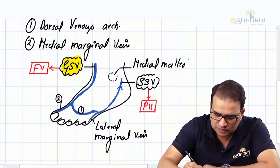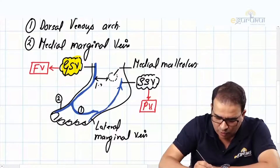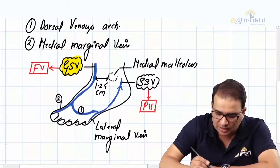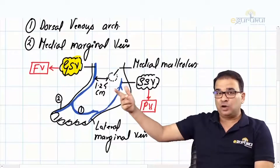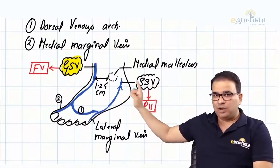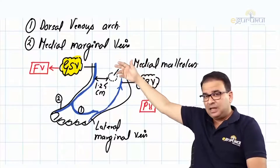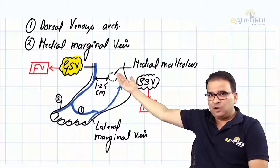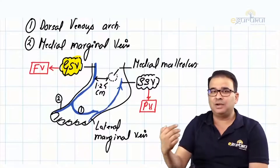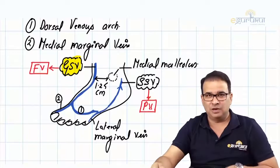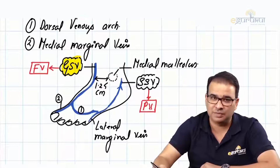There is the medial malleolus. Where will you find the great saphenous vein? You will find it almost 1.25 centimeters in front of the medial malleolus - in front of the medial malleolus. On the medial malleolus when you look, the great saphenous vein is running approximately 1.25 centimeters in front - not behind, in front of the medial malleolus.